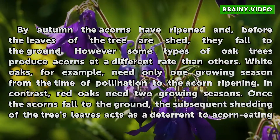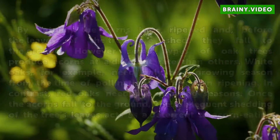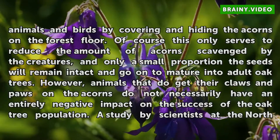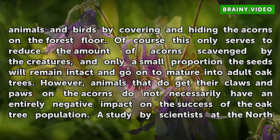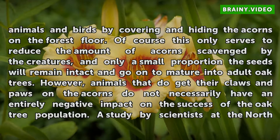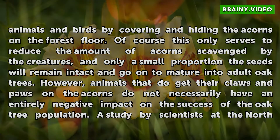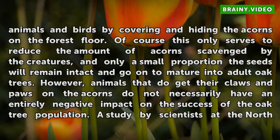Once the acorns fall to the ground, the subsequent shedding of the tree's leaves acts as a deterrent to acorn-eating animals and birds by covering and hiding the acorns on the forest floor. This only serves to reduce the amount of acorns scavenged, and only a small proportion of the seeds will remain intact and go on to mature into adult oak trees. However, animals that do get their claws and paws on the acorns do not necessarily have an entirely negative impact on the success of the oak tree population.